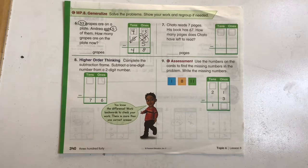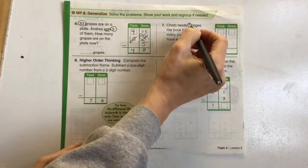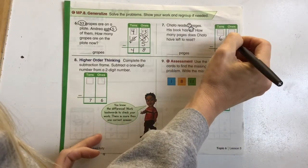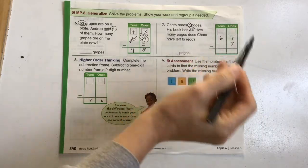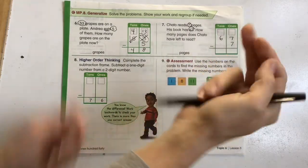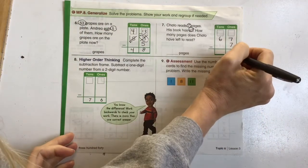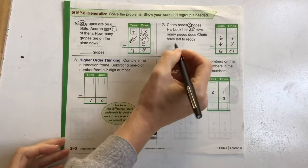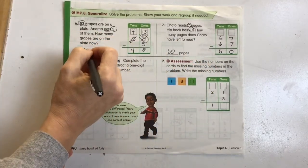Okay, it says Chato reads 7 pages. His book has 67. How many pages does Chato have left to read? So we have 67 pages. He's read 7 of them. So let's see if we need to regroup. 7 minus 7. If we have 7 ones, we can take away 7 ones, and that works. That becomes 0. And the 6 we can just drop straight down. So we do not need to regroup on that one. 60 pages.